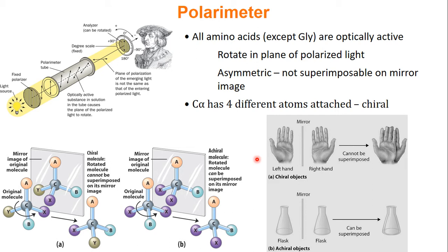In biochemistry, especially when it comes to proteins, an amino acid is chiral if its alpha carbon has four different groups attached to it. If it does not have four different things attached to it, it is achiral — not chiral. Glycine's side chain is hydrogen, so it is the only amino acid that is not chiral.